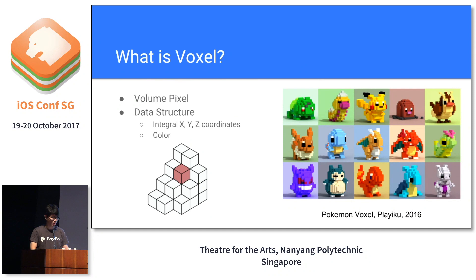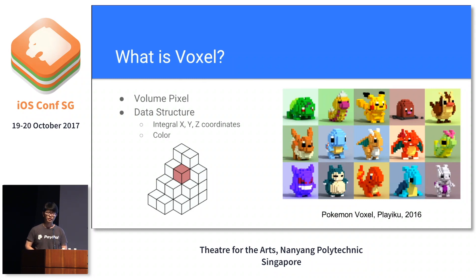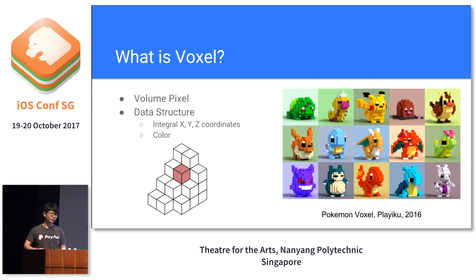So first, what is a voxel? Basically, they are 3D pixels. The structure of voxels is very simple: they have X, Y, and Z coordinates, and they have a color. That's it — very simple structure. It's a bit like Lego bricks. The most beautiful thing about this is they are very simple, but if you combine these simple blocks together and add a bit of imagination, you can get these amazing results, just like the photo I'm showing here.